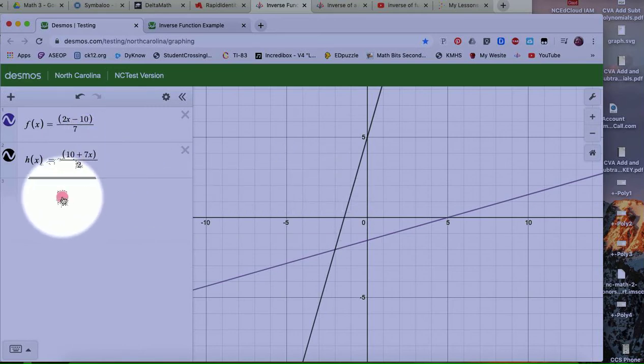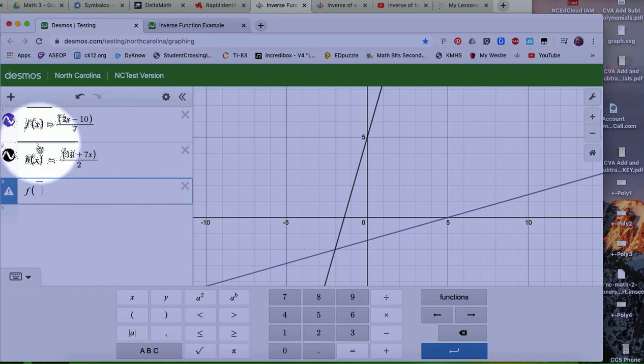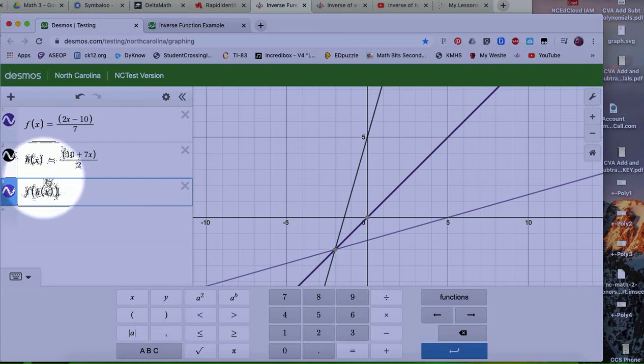I want to know if they're inverses of each other. To do that, you're going to take the composition and allow the calculator to do it for you. So I'm first going to take my f of x, but I'm going to replace that x with h of x. So f, and I'm going to replace the x here with h of x, just like that, and I'm going to close it with a parenthesis. So I've got that one.